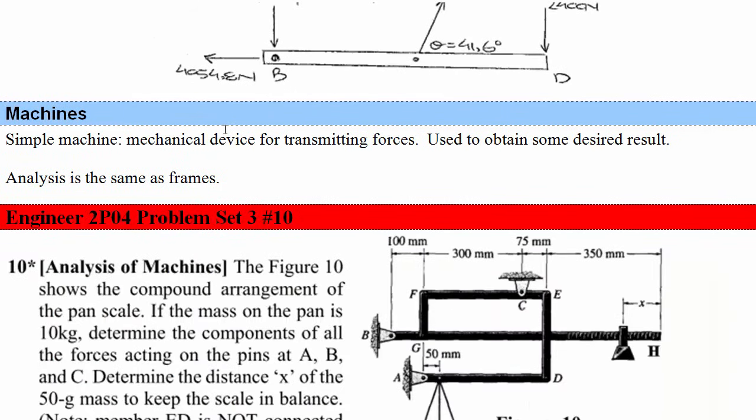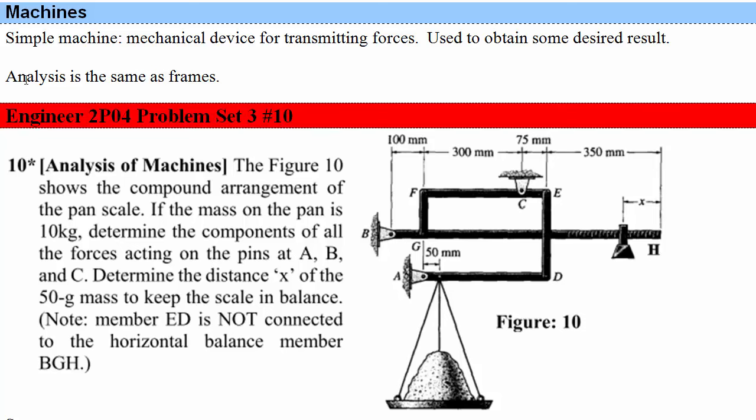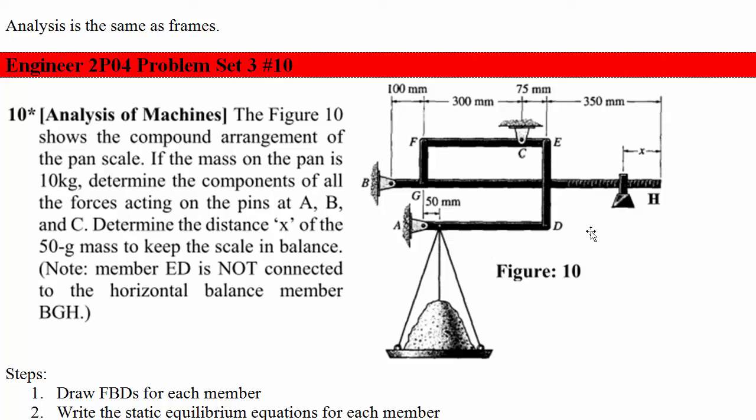Okay, last topic today: machines. A simple machine is just a mechanical device for transmitting forces to obtain some desired result. So the analysis for these is just the same as it is for frames. Here's an example of a machine. So this is a scale. We can move this mass back and forth and we can use it to figure out how much sand or sawdust or maybe this is sugar we've got on the scale over here.